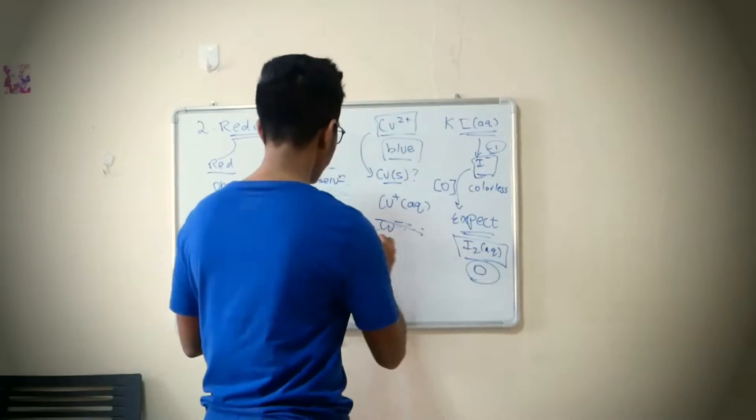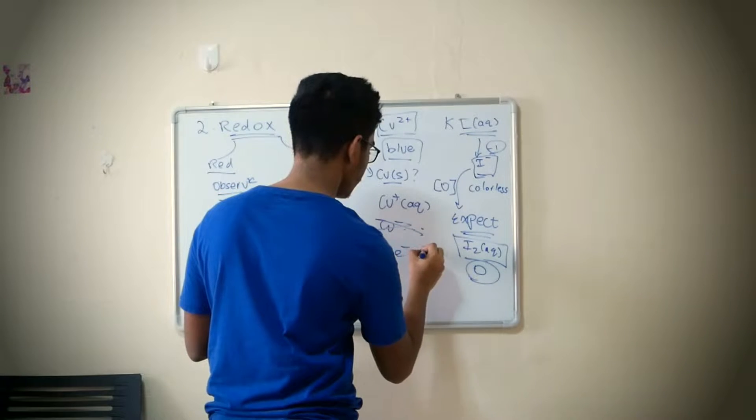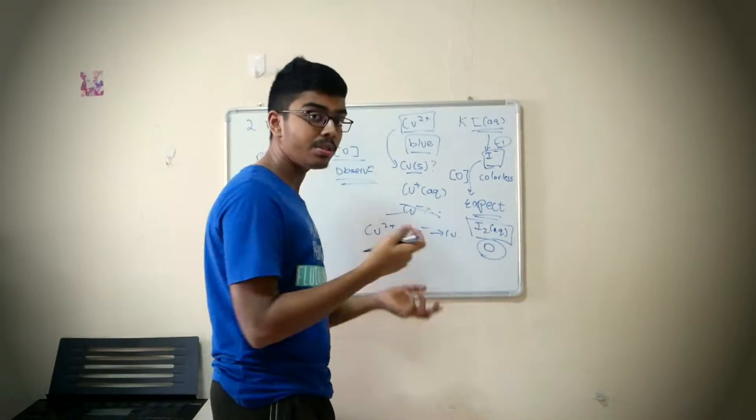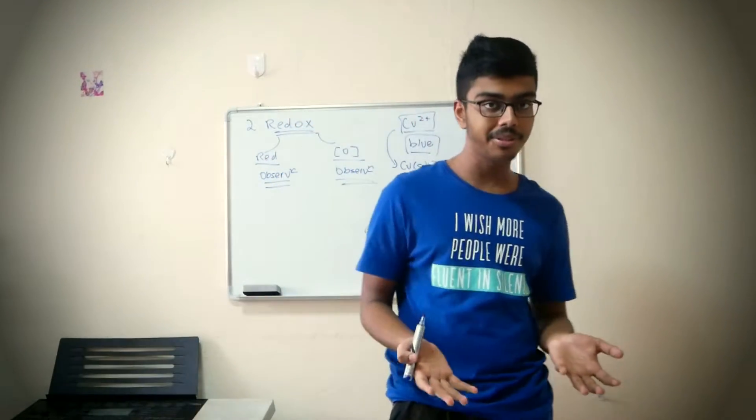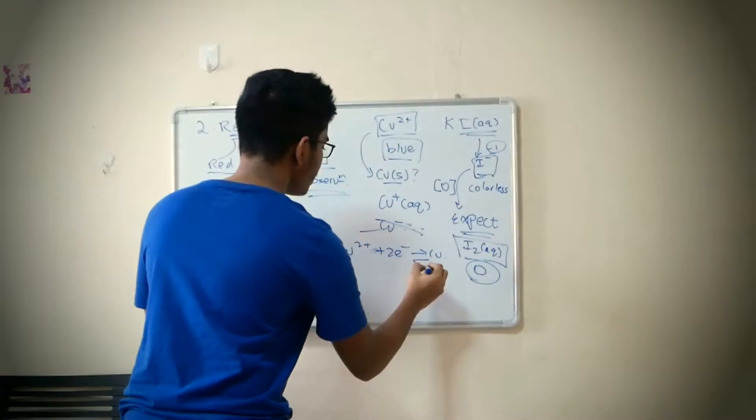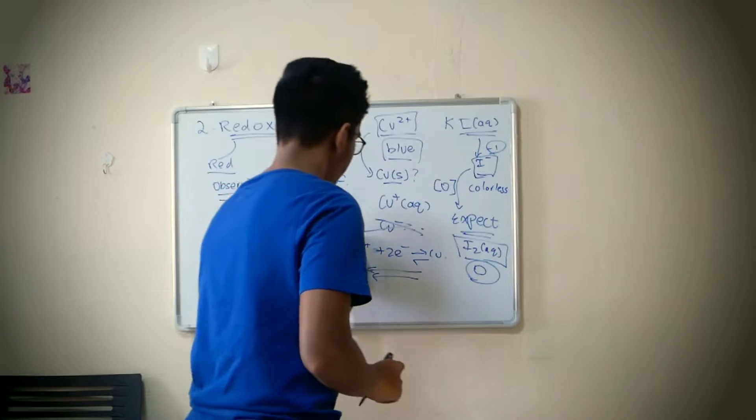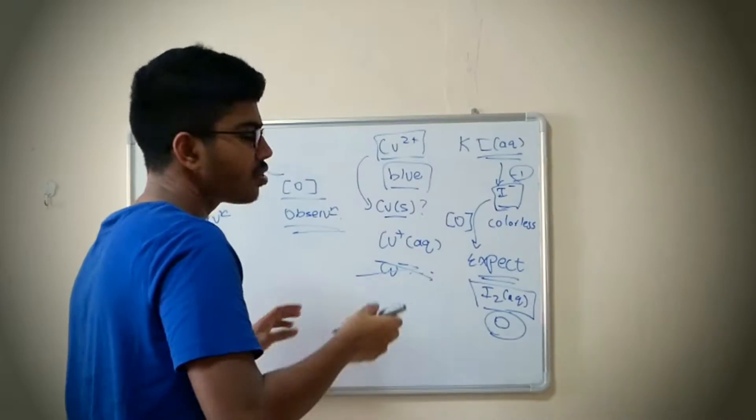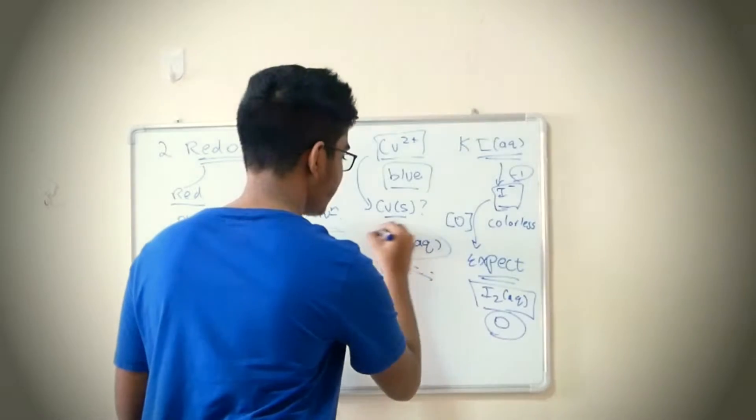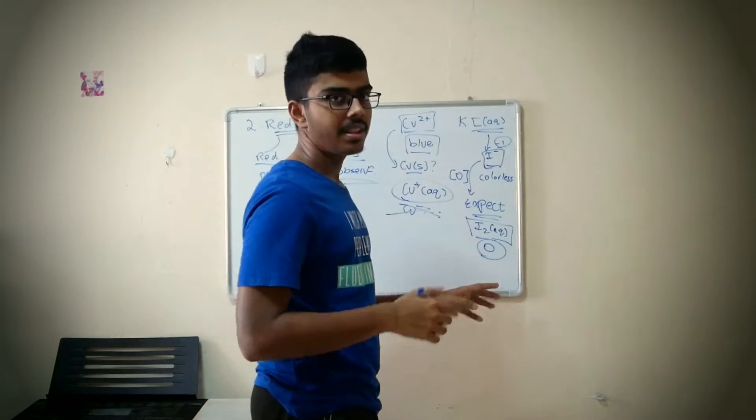So when these two things react, to form I2 aqueous, these things get oxidized. Minus one oxidation state to zero. Now this one, if this is oxidized, this should be reduced. The natural tendency that you guys have is: will it become copper solid or will it become copper plus aqueous? Copper solid, this is totally unfavorable. Metals tend to lose electrons.